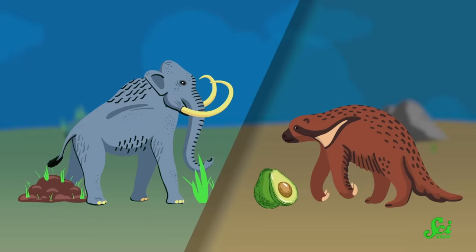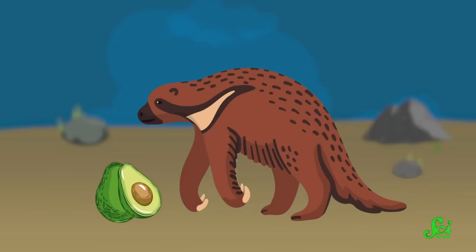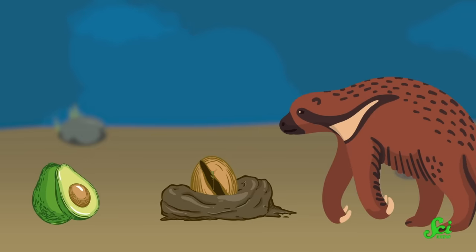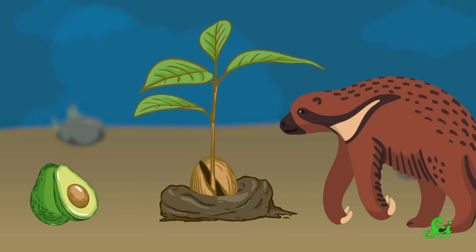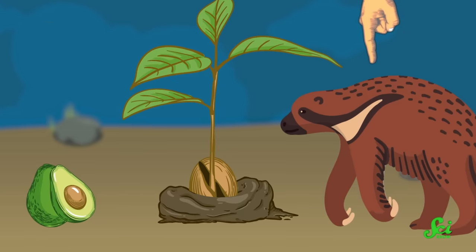Thing is, that paper only made a passing reference to sloths, and it didn't mention avocados at all. That same year, there was a follow-up paper hypothesizing that maybe that idea of big animals dispersing seeds could be applied to avocados, and pointed the finger at ground sloths as those dispersers. And I can't stress this enough: neither of these papers reported any data on sloths or avocados at all.